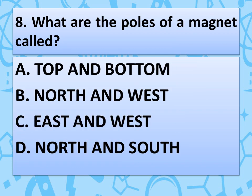Our next question is: What are the poles of a magnet called? Option A — top and bottom, option B — north and west, option C — east and west, or option D — north and south. The correct answer is option D — north and south.